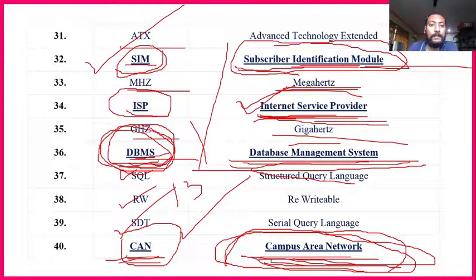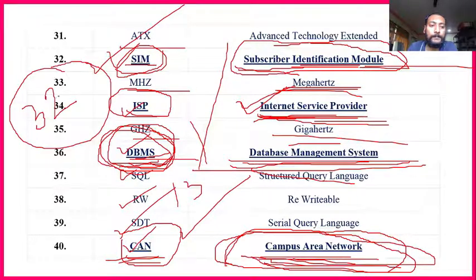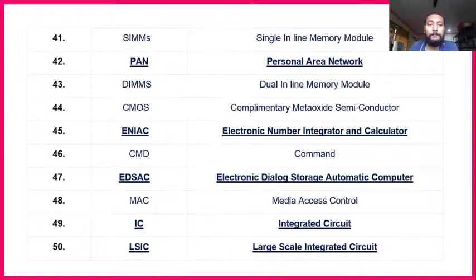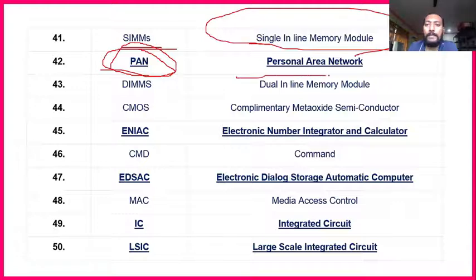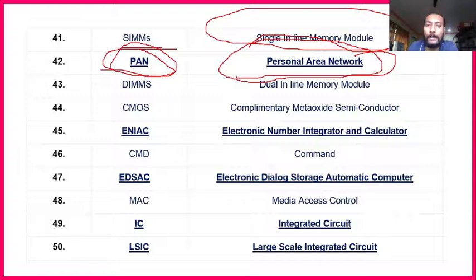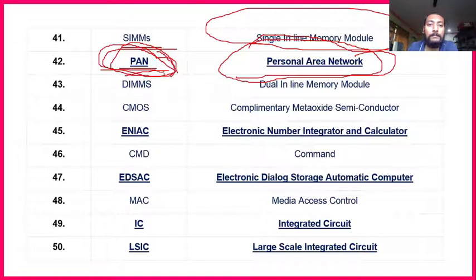Total from previous slides was 28; here SIM, ISP, DBMS, CAN — 4 more — so total becomes 32 important abbreviations. SIMM — Single Inline Memory Module — is not important. PAN — Personal Area Network — is important. In computer language, PAN means Personal Area Network — not to be confused with PAN card (Permanent Account Number).